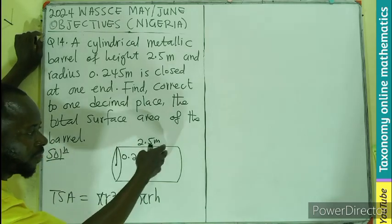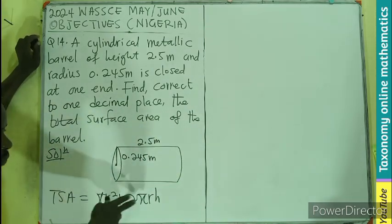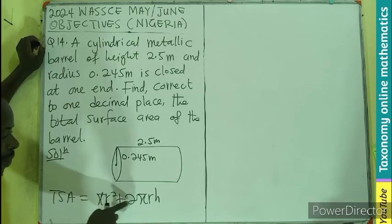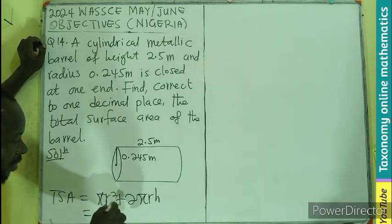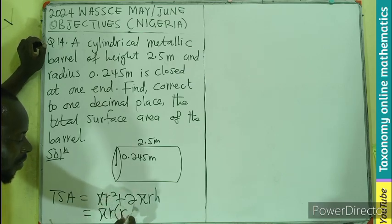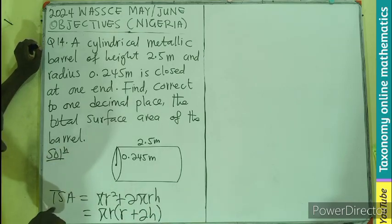If we are to substitute, πr can be made the subject. So from πr² plus 2πrh, we can factor out πr to get πr(r + 2h). The total surface area is simplified in this form.